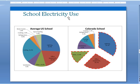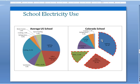Before I go into the eGauge interface, let's look at your school. The average U.S. school looks like this, and in Colorado the energy consumption in schools looks more like this. These three wedges — lighting, office equipment, and other plug loads — are the ones you have the most control over, and they also comprise the majority of electricity use in your school.